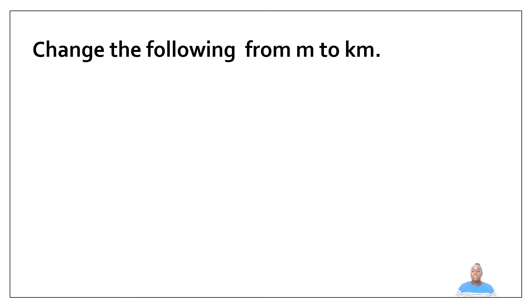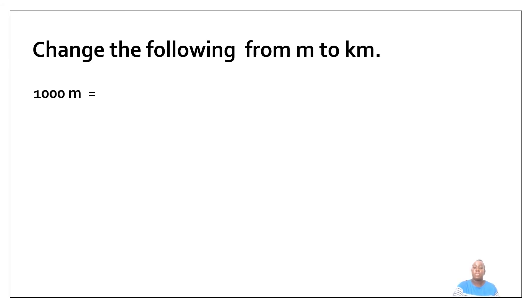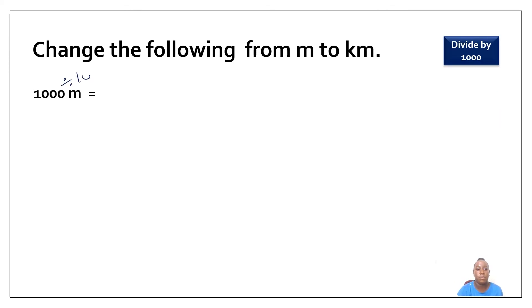We will be changing from meters to kilometers. The first question is one thousand meters. What do I do when I'm converting meters to kilometers? I have to divide by one thousand. One thousand divided by one thousand is going to be one. My answer will be one kilometer.